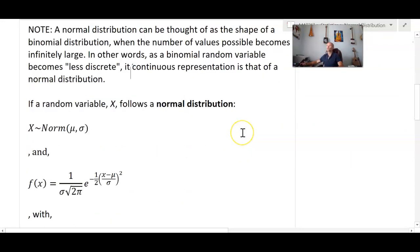Okay, so a normal distribution can actually be an approximation to a binomial experiment if the sample size is large. So if n exceeds 30, we can actually approximate the binomial distribution with the normal distribution. And if a random variable x follows a normal distribution, we say x is distributed as a normal random variable with mean mu and standard deviation sigma.